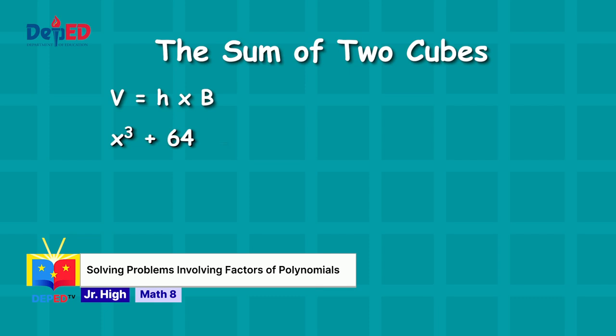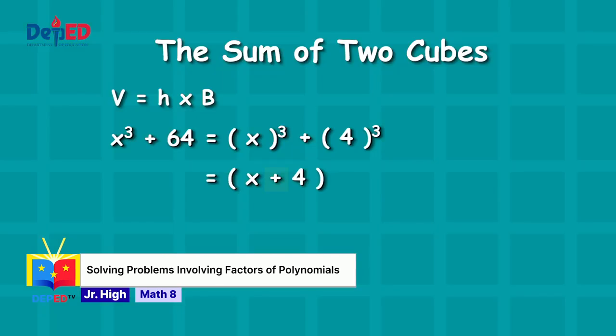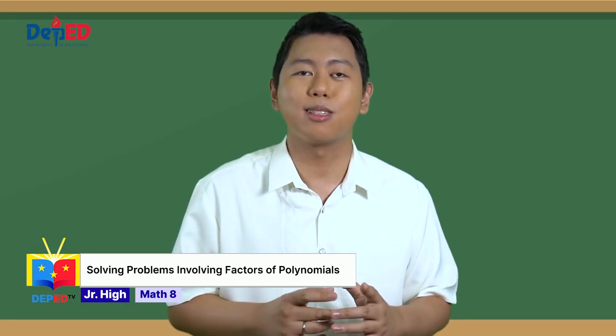Since this is a sum of two cubes, the polynomial can be factored by expressing each term into cubes of certain expressions. x cubed is just the cube of x and 64 is the cube of which number? It is 4. And since this is a sum of 2 cubes, the binomial factor is x plus 4. This is the height of our trough. Now, let us solve for the base area by finding the trinomial factor of this polynomial.